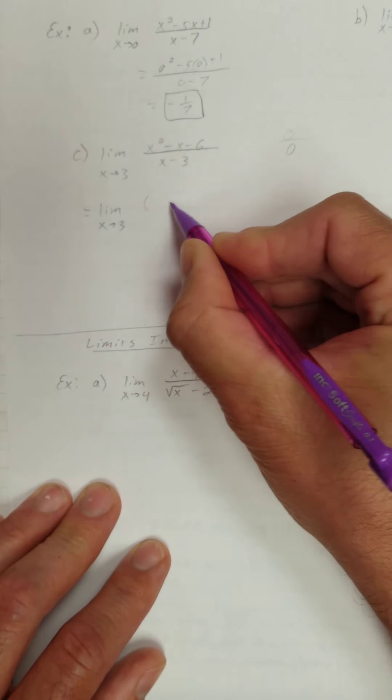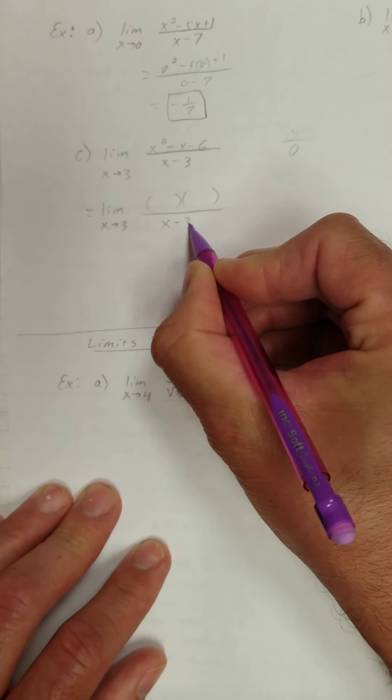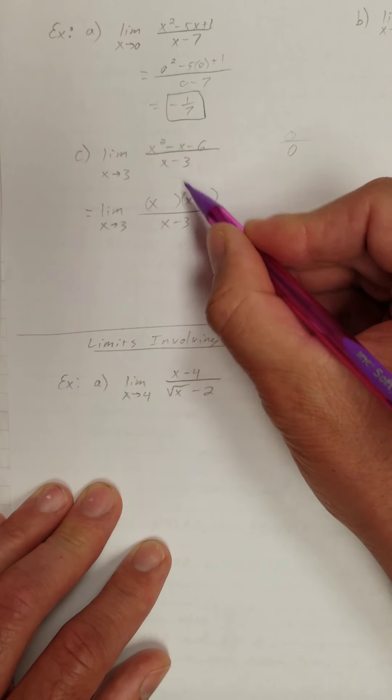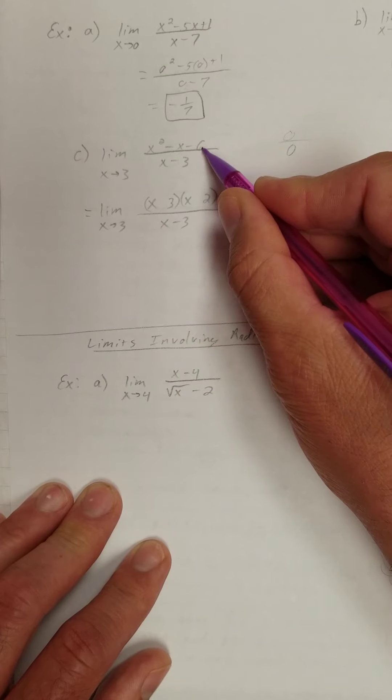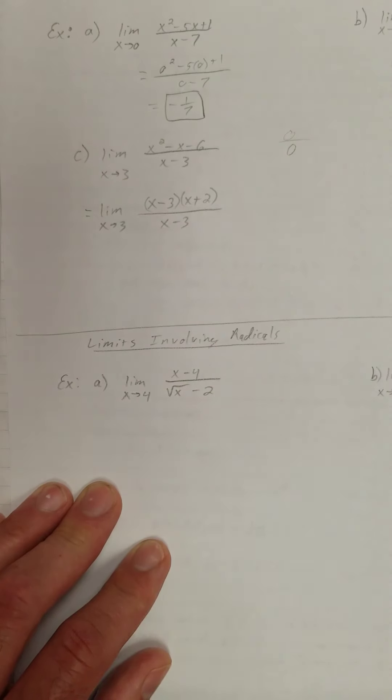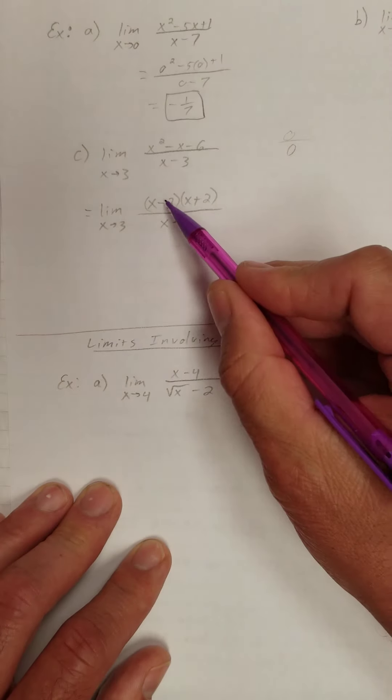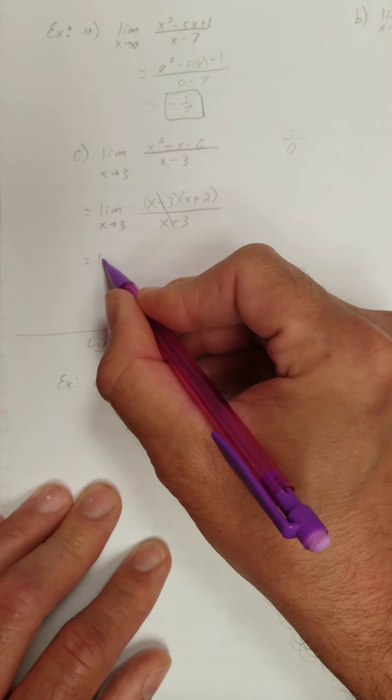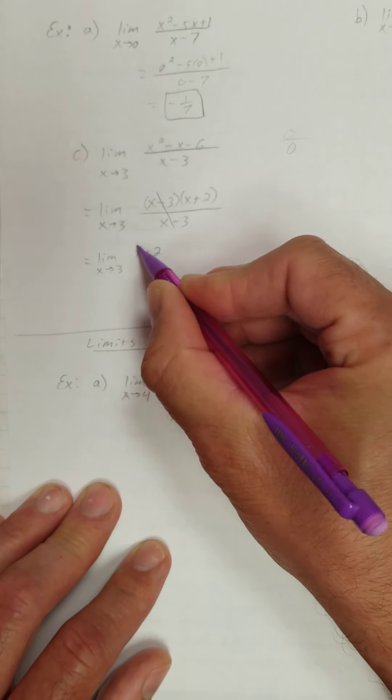As x approaches 3 of, let's factor the numerator. The denominator cannot be factored. Let's see, x and x will give me x squared. 3 and 2 would give me 6, and 3 needs to be negative, 2 needs to be positive. All right. Now what happens here? These divide out, right?